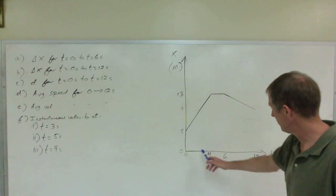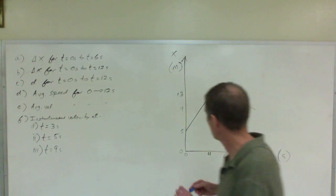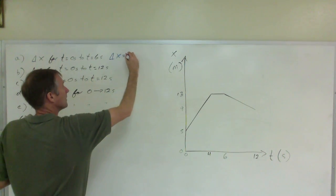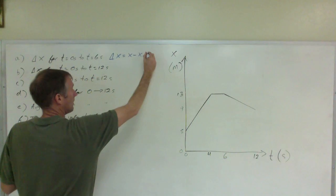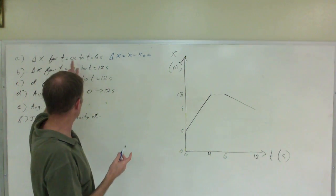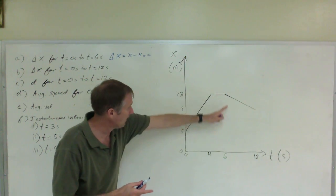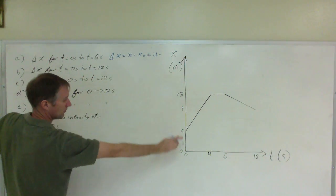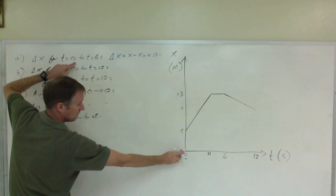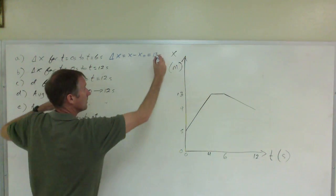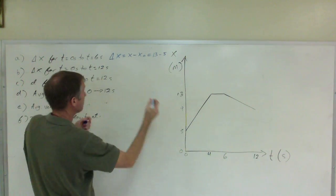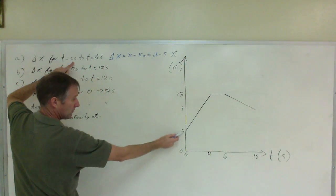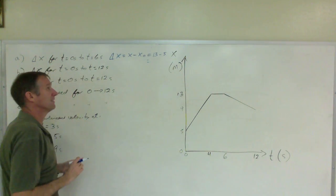To find displacement from 0 to 6 seconds, pull the information off the graph. Delta x equals x minus x-sub-0. At 6 seconds, the final position is 13 meters. At 0 seconds, the initial position x-sub-0 is 5 meters. So 13 minus 5 equals 8 meters.